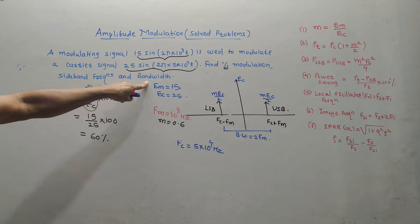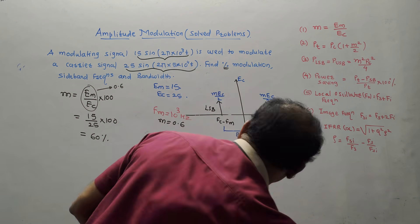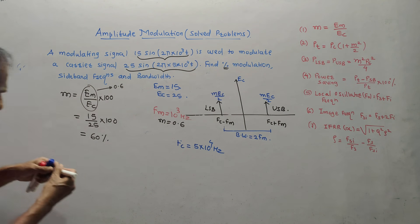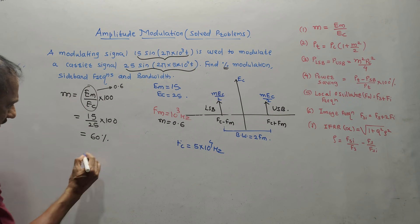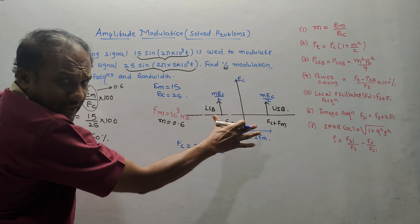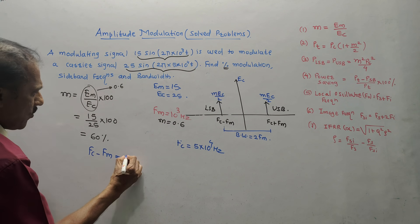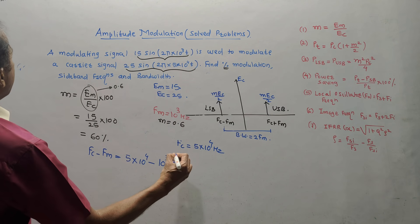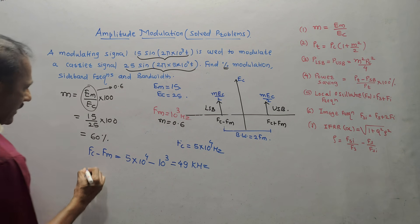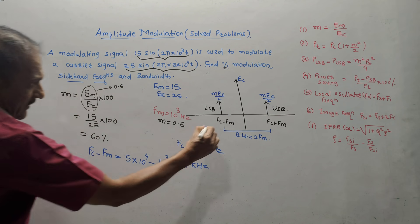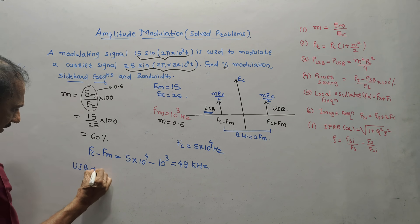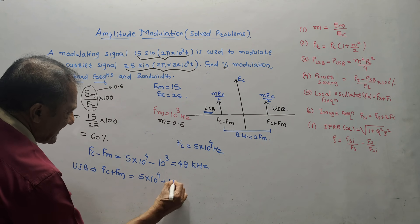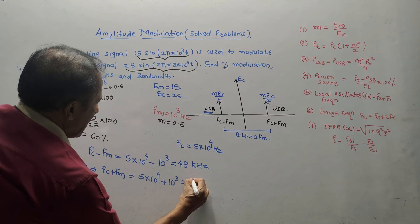Next, we calculate sideband frequencies and bandwidth. There are two sidebands — lower and upper. The lower sideband frequency is FC minus FM: (5 × 10⁴) minus 10³ = 49 kHz. The upper sideband frequency is FC plus FM: (5 × 10⁴) plus 10³ = 51 kHz. To complete the diagram, EC = 25, LSB = 49 kHz, USB = 51 kHz.